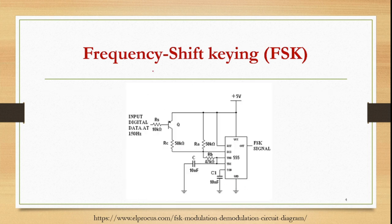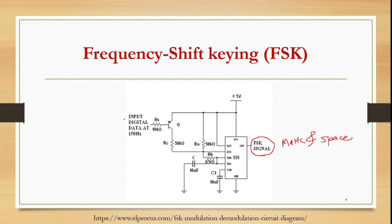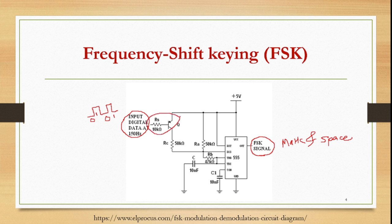This is the circuit used to generate FSK. The output will be an FSK signal with mark and space frequencies depending upon the input digital data. That input digital data is a square waveform having 0-1-0-1 pulses. This data is connected to a transistor, and the transistor acts like a switch.